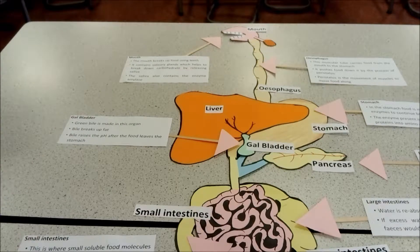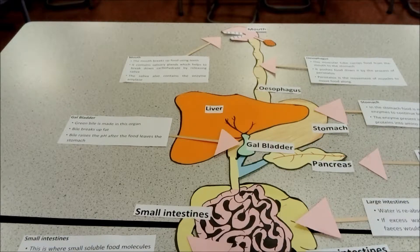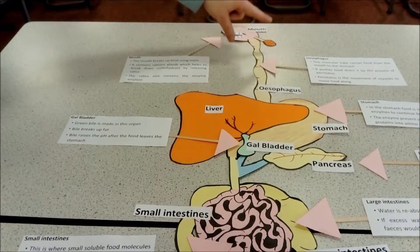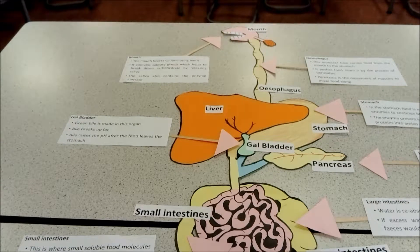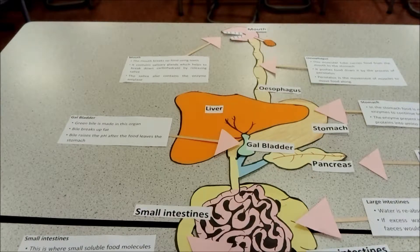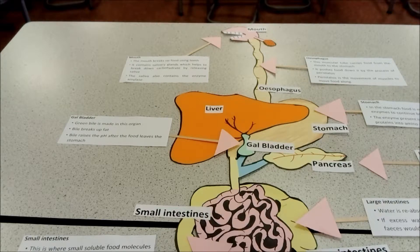Digestion starts in the mouth. In the mouth we get mechanical breakdown of food — the mouth is chewing it up, increasing the surface area. At the same time, saliva is being added from the salivary gland. Saliva lubricates the food so it passes through the rest of the system more easily, and it contains the enzyme amylase which breaks down starch into glucose.